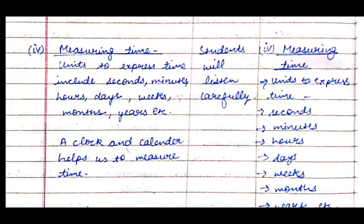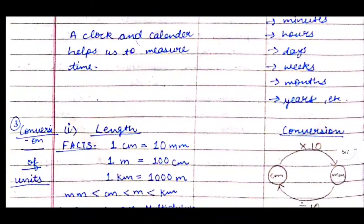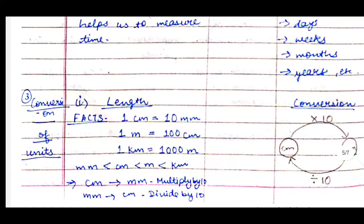Then comes measuring time. Units to express time include seconds, minutes, hours, days, weeks, months, and years. A clock and calendar help us measure time. We'll write all these units on the board and students will listen carefully.